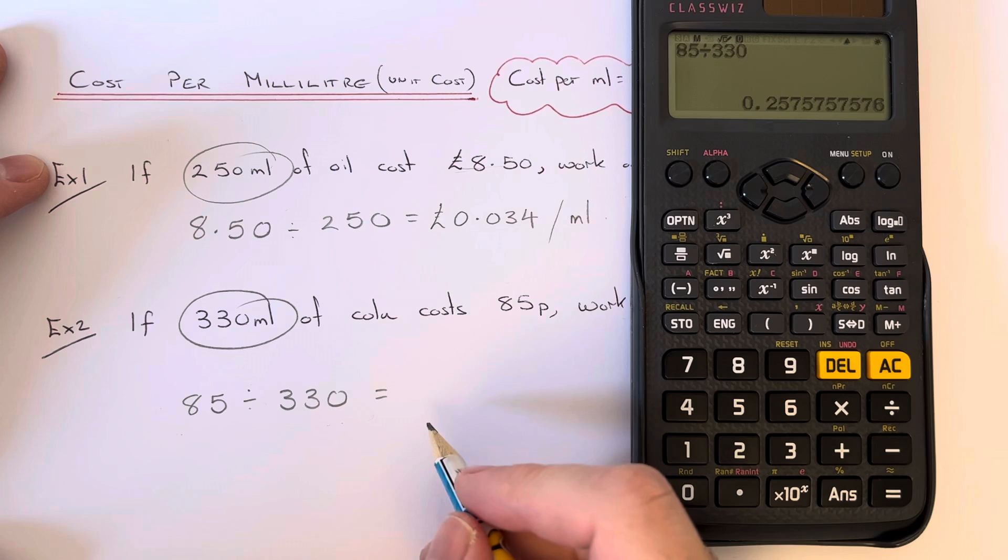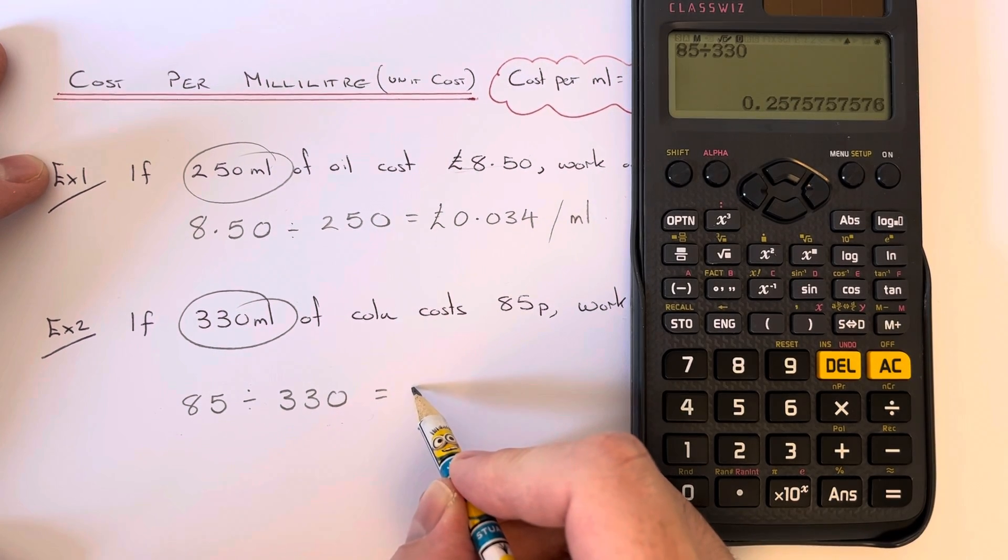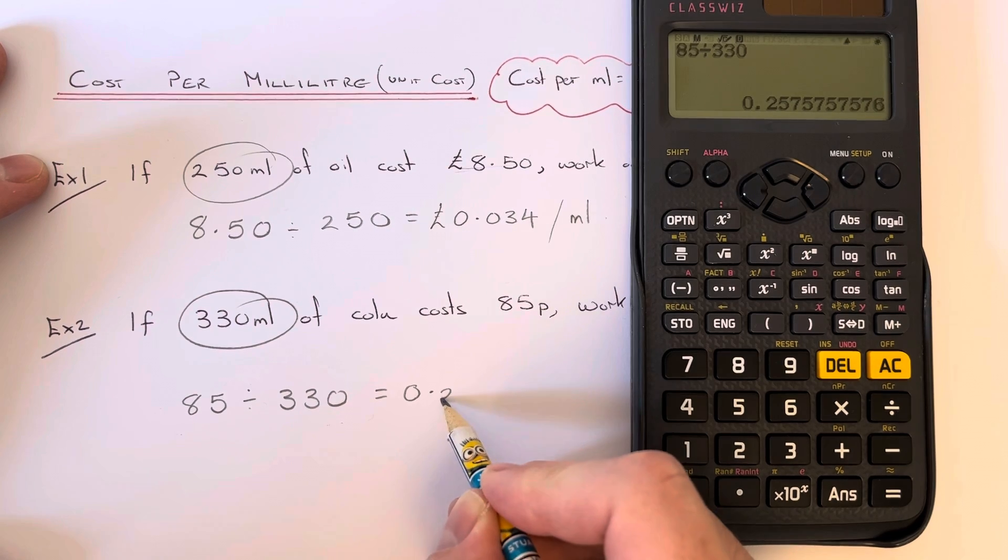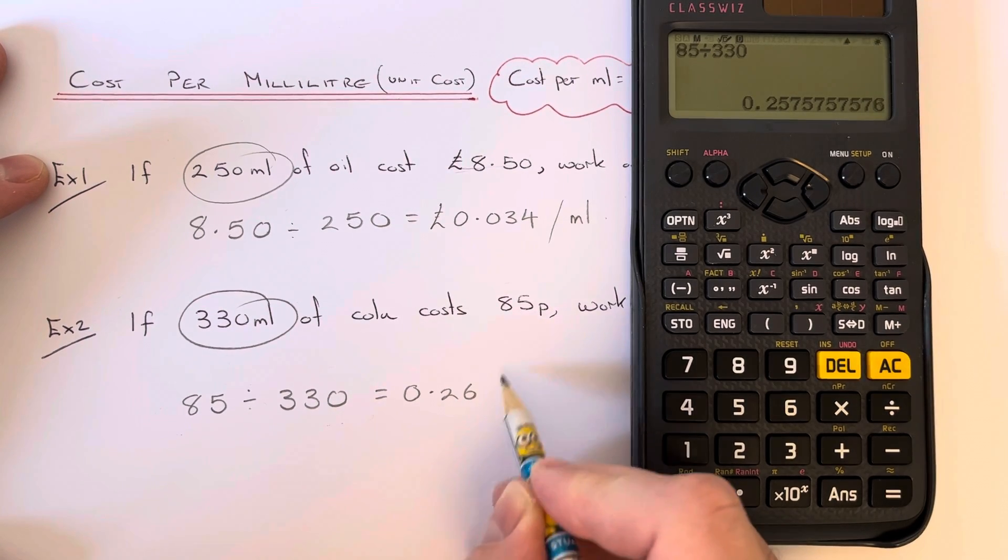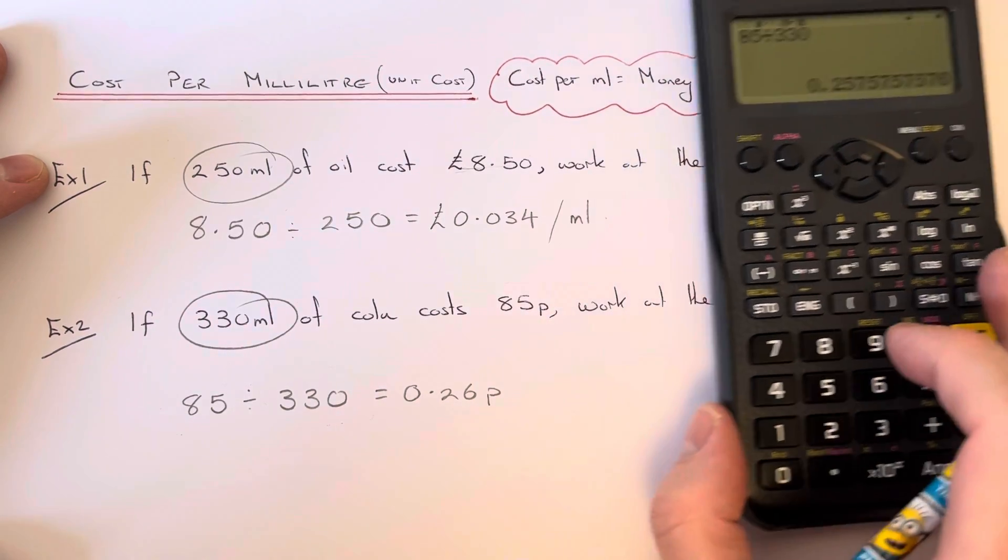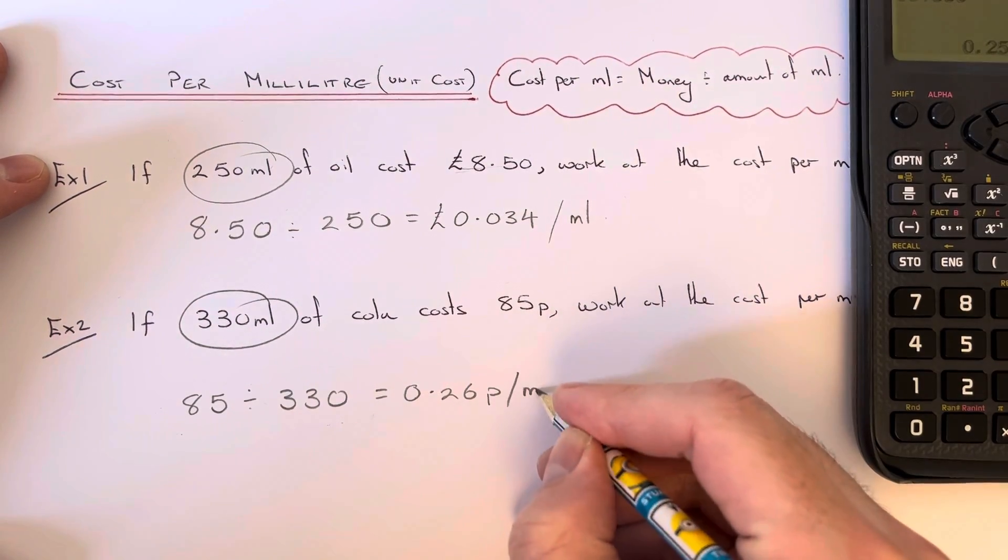I'm going to round this one off to two decimal places, so let's say 0.26. This will be in pence because our price to begin with was in pence, and that would be per milliliter.